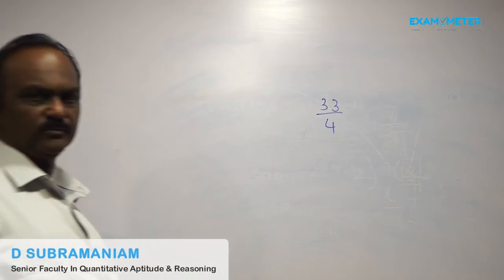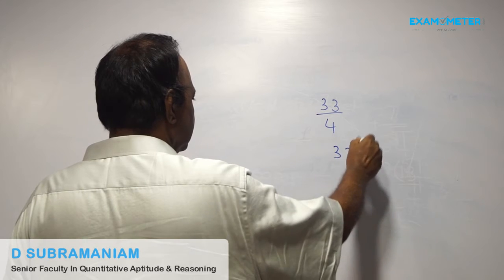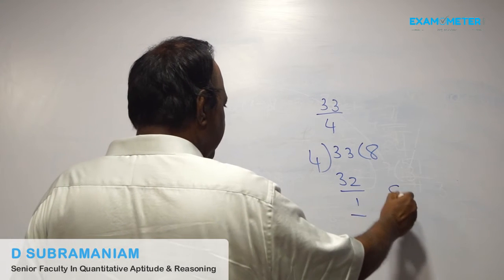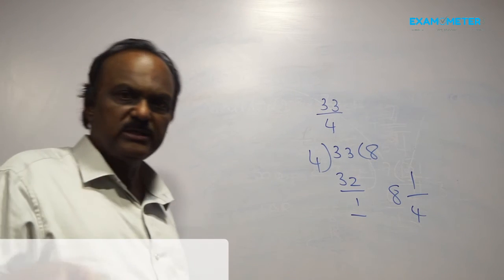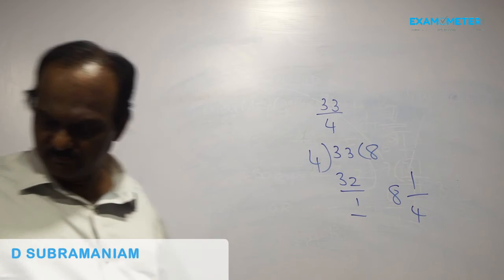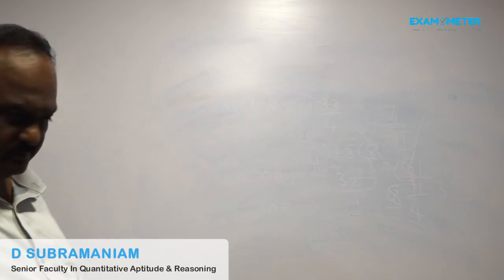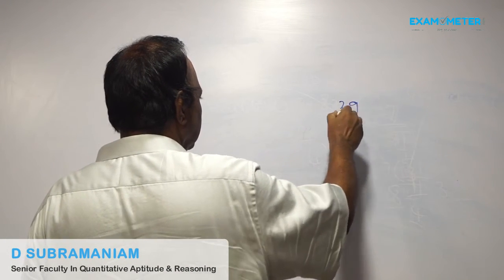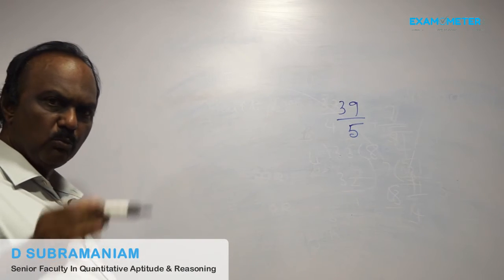Convert 33 by 4 into a mixed number. The quotient is 8, the remainder is 1, and the divisor is 4. So the mixed number is 8 and 1 by 4. Similarly, convert 39 by 5 into a mixed number.